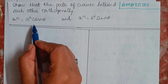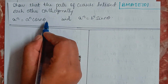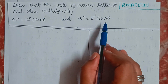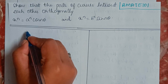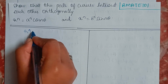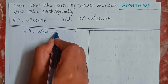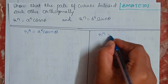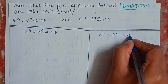The curves are given as r to the power n equals a to the power n cos(nθ), and r to the power n equals b to the power n sin(nθ). I will write down both curves here.